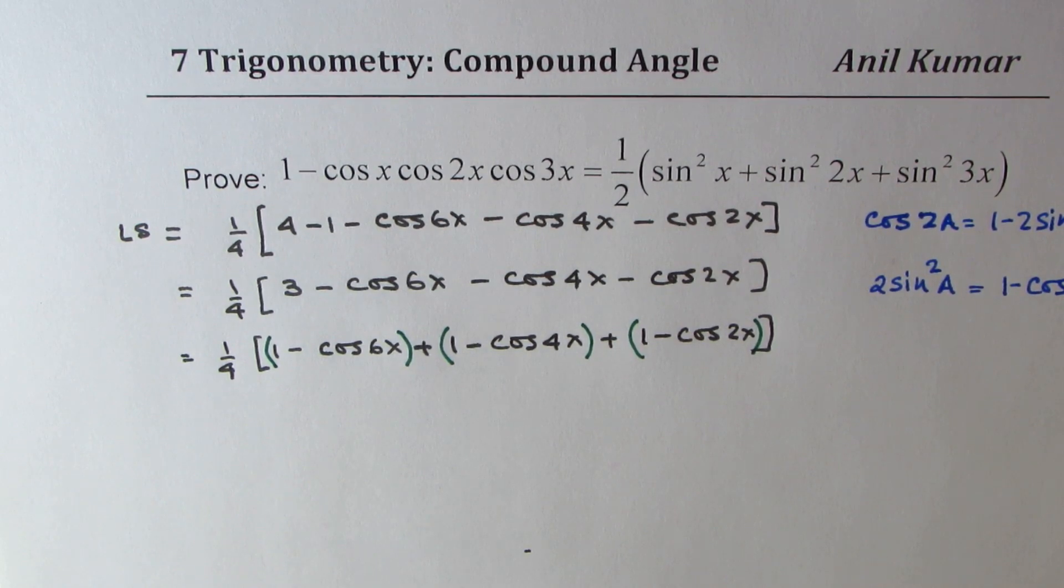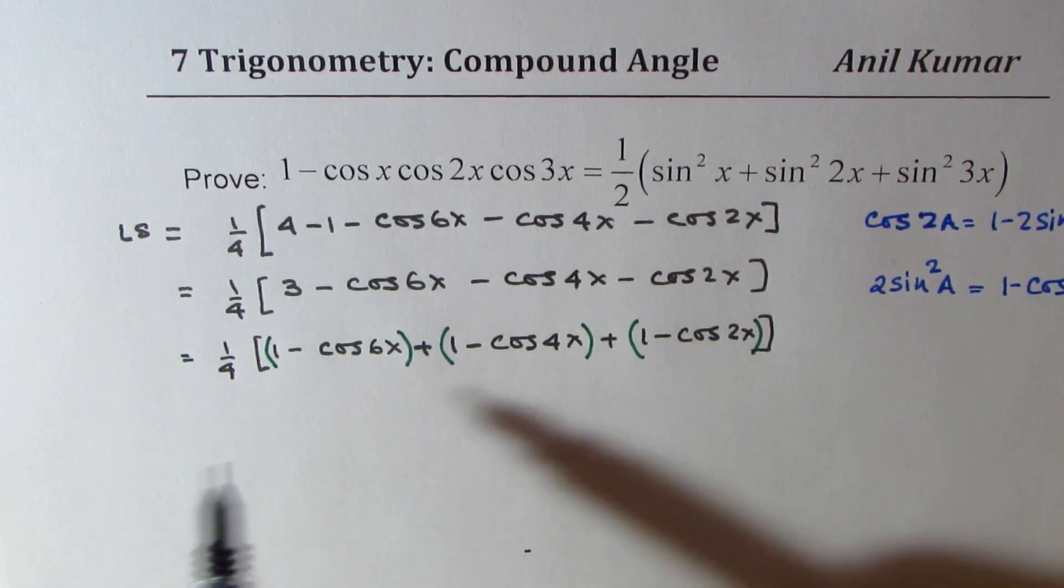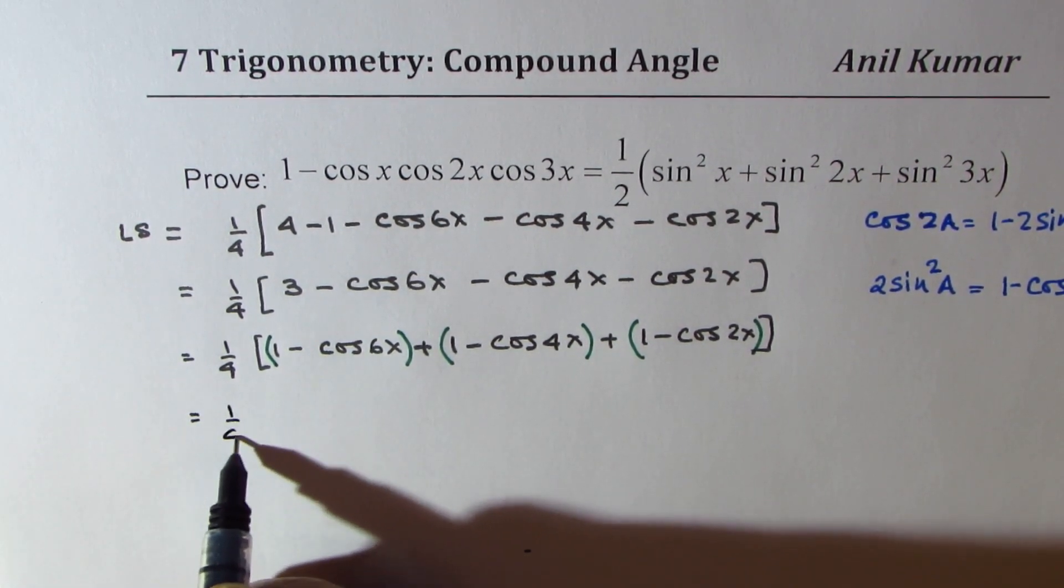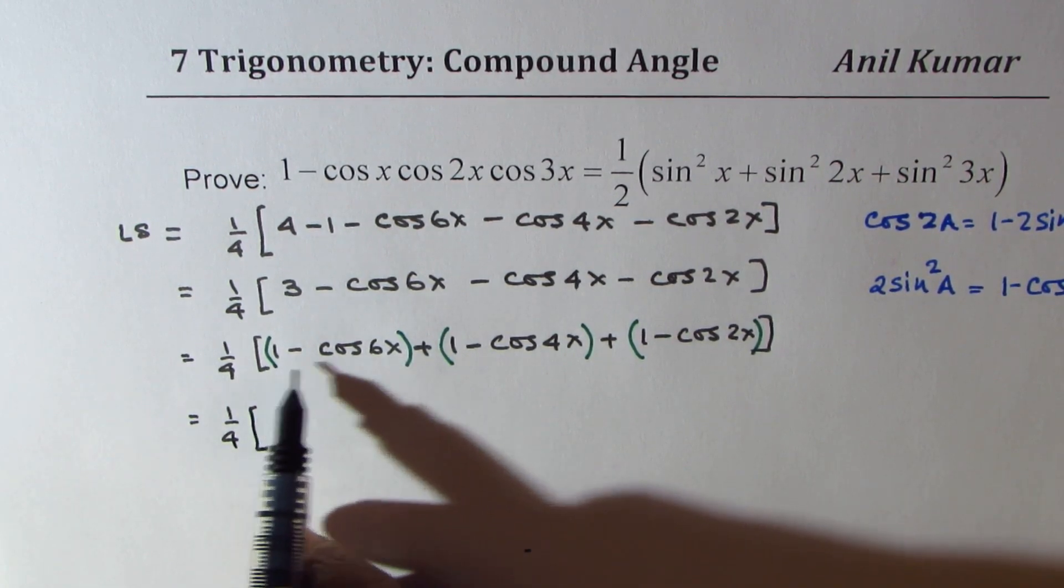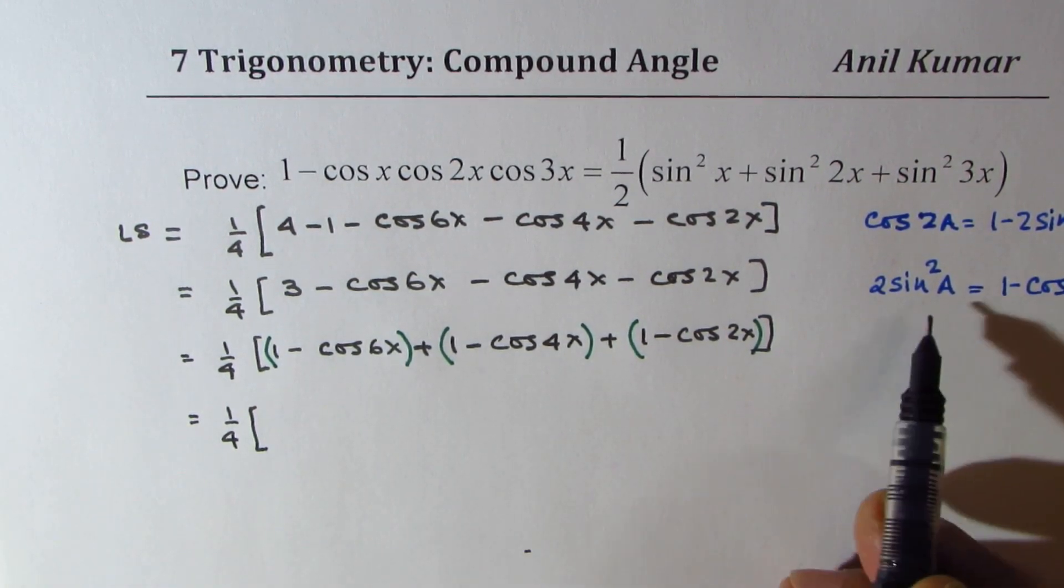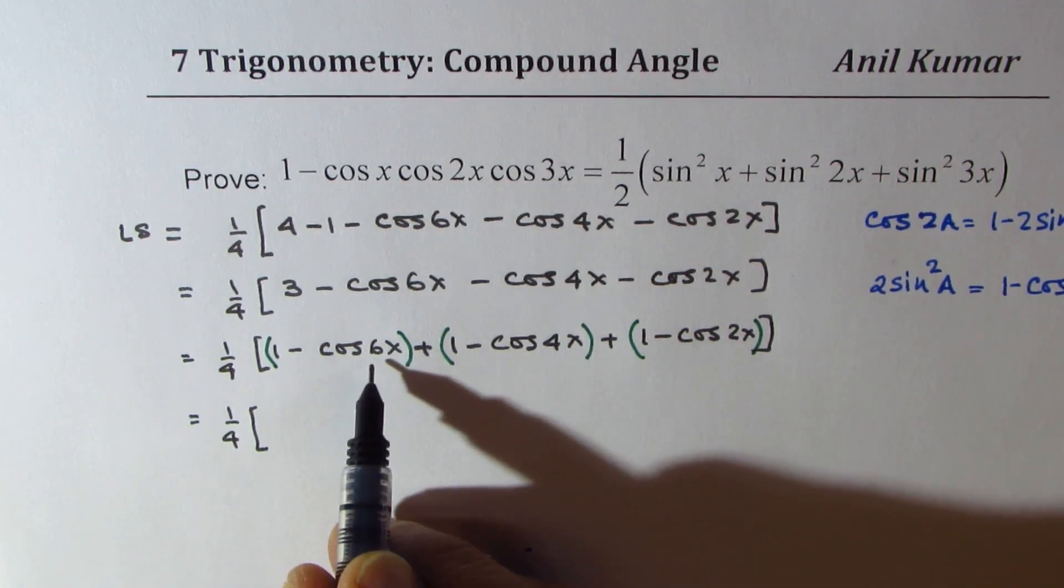So, what we get from here is 1 fourth of 1 minus cos 6x. So, a is like half of 2a. So, half of 6 is 3.